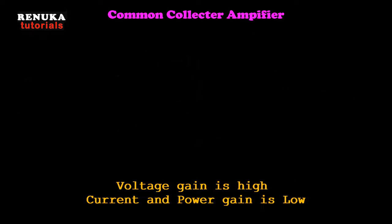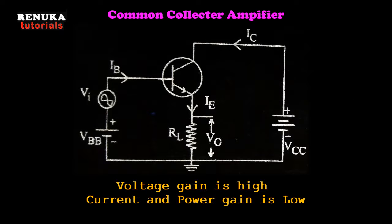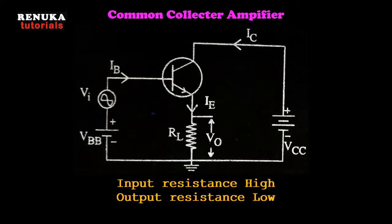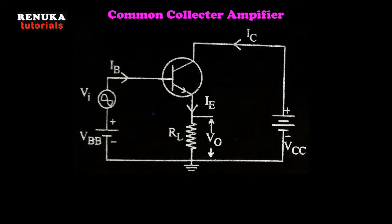In the common collector configuration, the current gain is very high, but the voltage gain is less than 1. Power gain is low compared to common base and common emitter. The input resistance is high and output resistance is very low. Therefore this configuration is useful for impedance matching only — an amplifier with high output impedance can be connected to a load with low impedance.